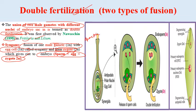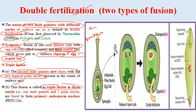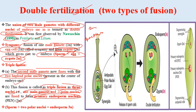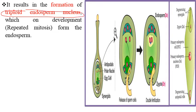In triple fusion, the second male gamete fuses with the two haploid polar nuclei present in the center of the embryo sac. This fusion is called triple fusion because three nuclei - one male gamete and two polar nuclei - fuse to form the primary endosperm nucleus, which is triploid. Sperm plus two polar nuclei gives rise to the endosperm. It results in formation of the triploid endosperm nucleus, which by repeated mitotic divisions forms the endosperm - the nutritive tissue providing nourishment to the developing embryo.